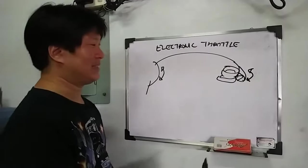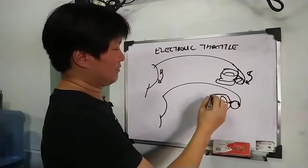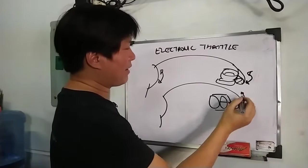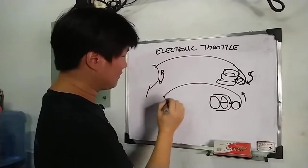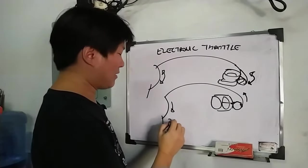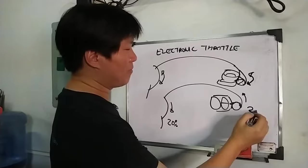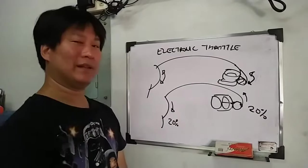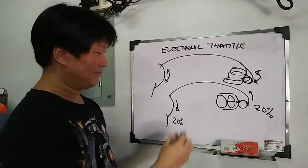Same thing with say an old 96 Civic. So, ito, pag tumapa ka, hinahatak to, bumubukas yan. Ito yung throttle cable. So, if you step on this one 20%, this thing opens also 20%. One is to one, basically.